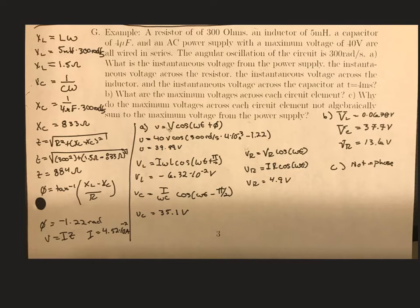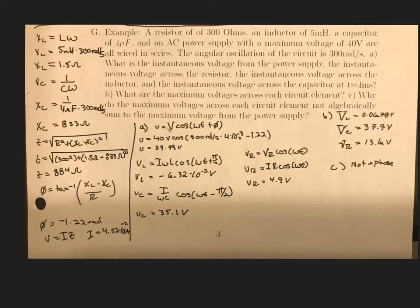For the capacitive reactance: 1 divided by the capacitance — which is 4 microfarads, so 4×10⁻⁶ — times the angular oscillation of 300 radians per second. That gives a reactance of 833 ohms.